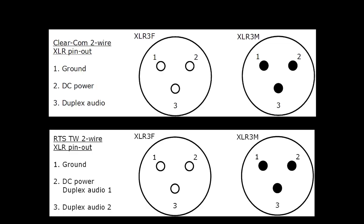So in terms of an intercom system, what does two wire actually mean? It's because the circuit is encompassed of two wires. Wire one is power and wire two is the transmission for the duplex audio. In the entertainment world, we typically see a two-wire system using an XLR connection. The two most common types of two-wire ports you're going to see are ClearCom and RTS.